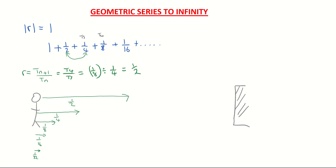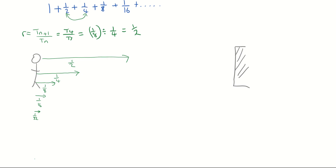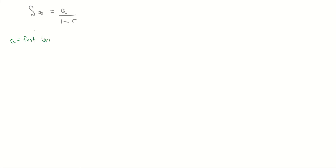We're going to prove what that value is. On page 22 in our log tables we have a formula: the sum to infinity, written as S∞, is equal to a over (1 − r). Here, a stands for the first term and r stands for the common ratio. Going back to our sequence — 1 + 1/2 + 1/4 + 1/8 + 1/16 and so on — our first term a is one.